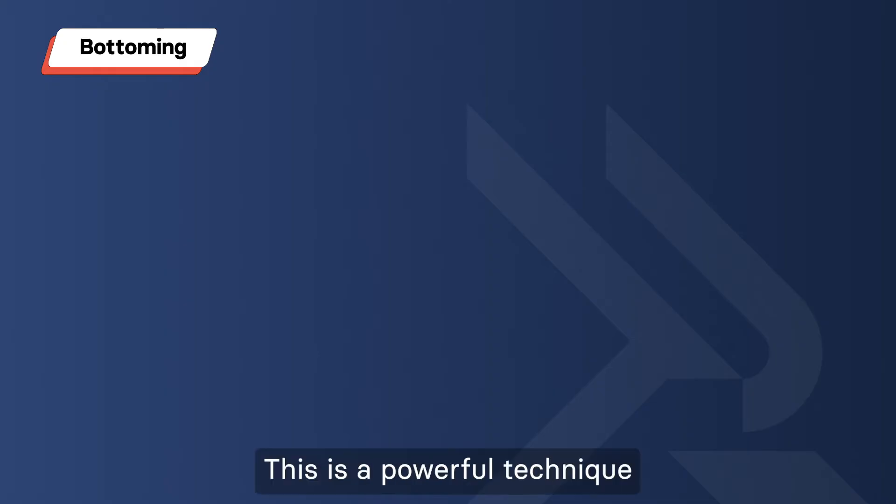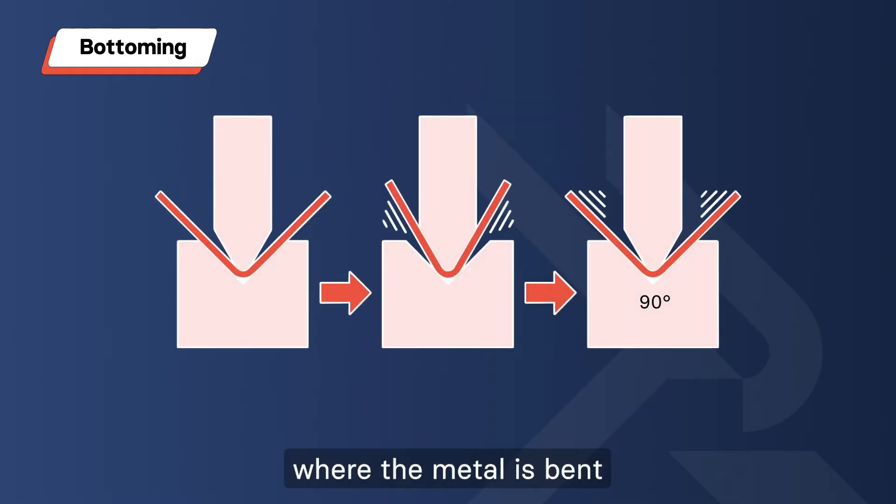Bottoming. This is a powerful technique where the metal is bent using a punch that reaches the bottom of the die, ensuring a sharp bend with minimal spring back.